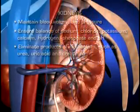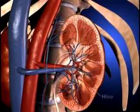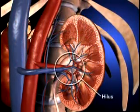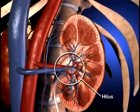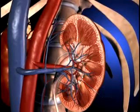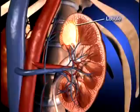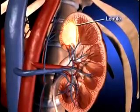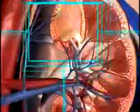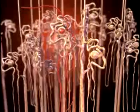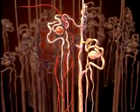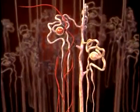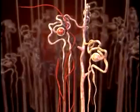The medial border of the kidney is indented by a deep fissure called the hilus, where the blood vessels, nerves, and ureters connect to the kidney. The kidney is composed of up to 18 lobes, and each lobe is composed of nephrons. Nephrons are the functional units of the kidney, and each kidney contains more than 1 million nephrons.